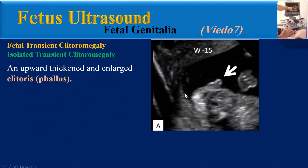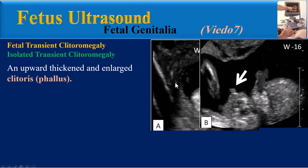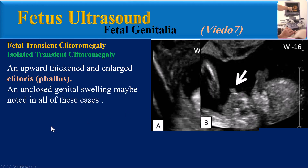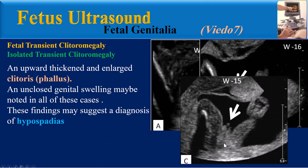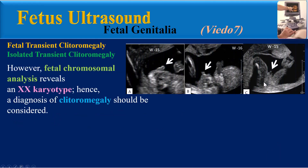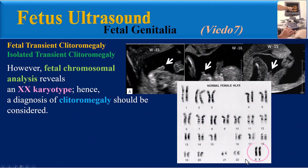Regarding isolated transient clitoromegaly, the definition of clitoromegaly is an upward, thickened, and enlarged clitoris. We can see clitoromegaly at 15 and 16 weeks gestation in this fetus. In a sagittal plane, the clitoris is thick and in an upward direction. An unclosed genital swelling may be noted in all of these cases, and these findings may suggest a diagnosis of hypospadias. This coronal plane from the same fetus at 15 weeks shows male genitalia with hypospadias.